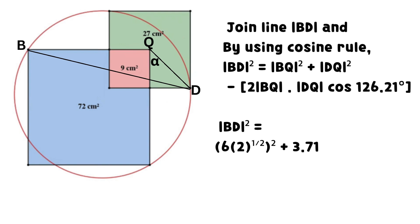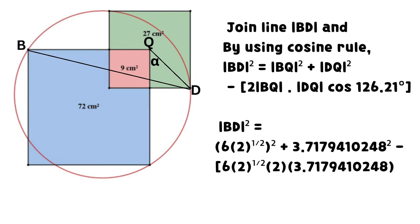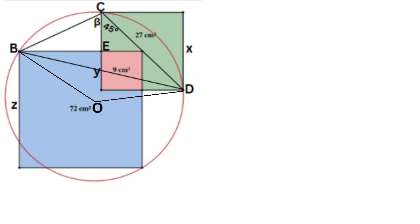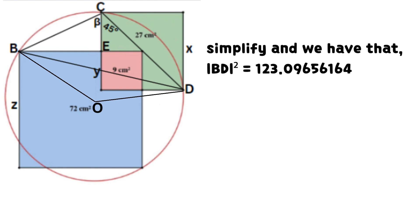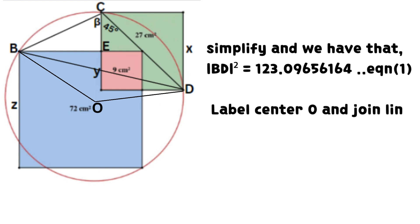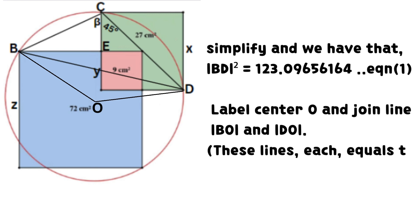Join line BD. Using the cosine rule for BD², substitute values obtained and simplify to get a new equation for BD². Simplify and we have that BD² = 123.09656164, which we call equation 1.